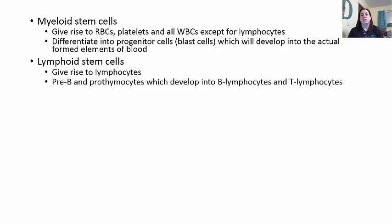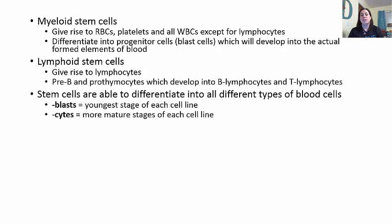Lymphoid stem cells give rise to lymphocytes. There are two main groups: pre-B and pro-thymocytes, which develop into either B lymphocytes or T lymphocytes. These two types mature in different areas of the body, which gives them their names and their different functions—which we'll discuss more in chapter 22. When a cell is labeled with 'blast,' it's the younger stage; when it becomes a 'cyte,' like an erythrocyte, it's the mature stage and performs its specialized job.